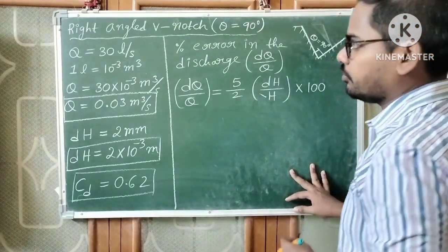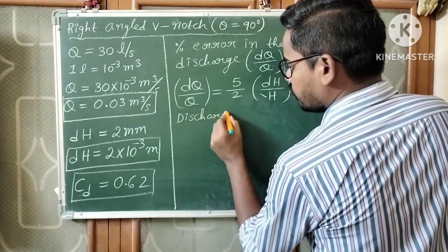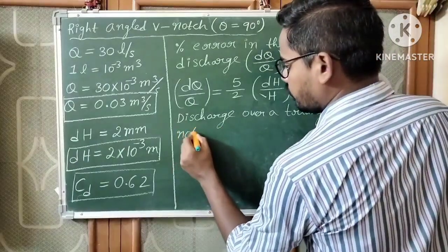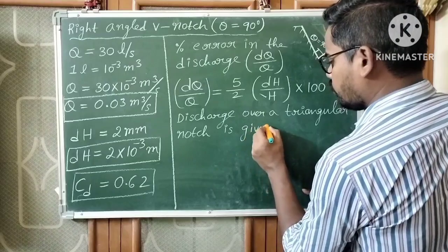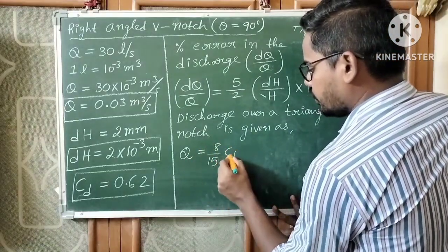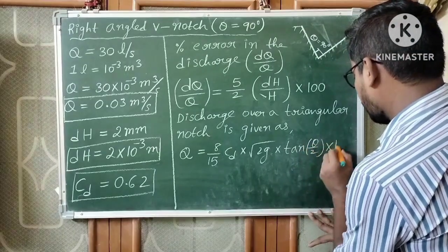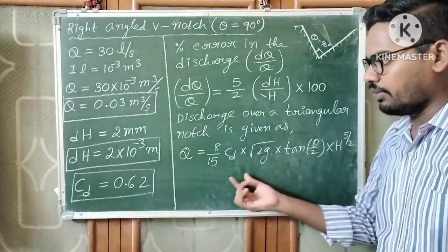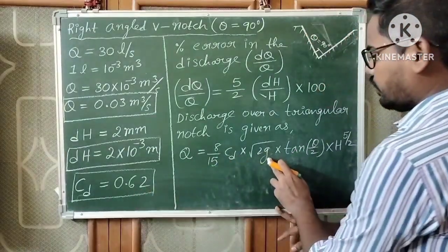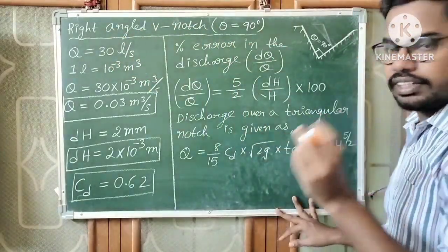To find H, we use the discharge formula for a triangular notch: Q equals 8 by 15 into CD into root over 2g into tan(theta by 2) into H to the power 5 by 2. Here CD is 0.62, g is 9.81, theta is 90 degrees for a right-angled V-notch, and H is the unknown. Q is already known as 0.03 meter cube per second.